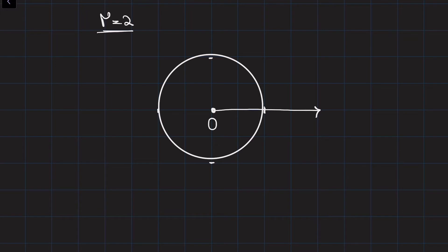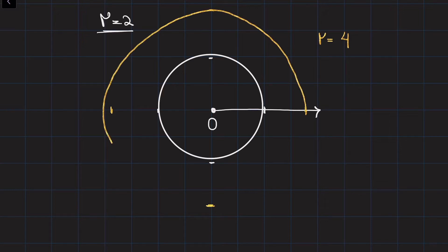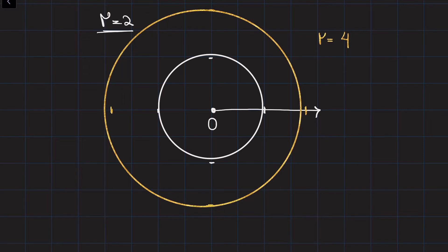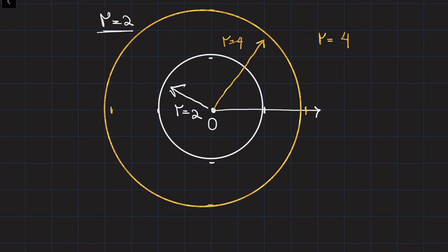So it appears circles can be described by a simple equation in polar coordinates. For example, r equals four would give a circle where the distance from the origin to any point is four, and r equals two gives a circle where every point is equidistant from the origin by a distance of two. This is how we sketch circles in polar coordinates with the center at the origin.